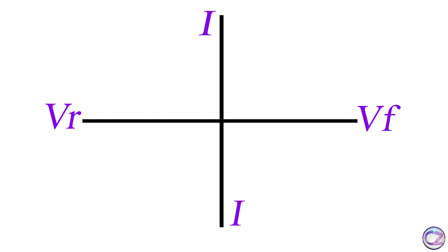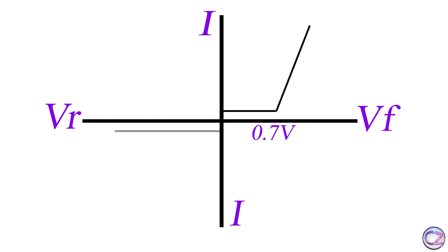So if we have forward bias, we will be able to get current from 0.7V. And if we have reverse bias, we will be able to get current starting from around 0.8V. We may not get current below 0.7V, but we will be able to get current at around 2.5V.